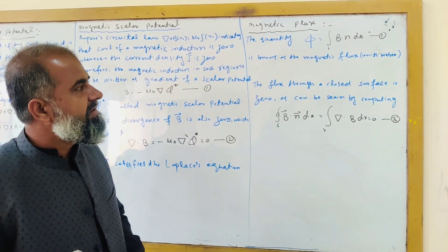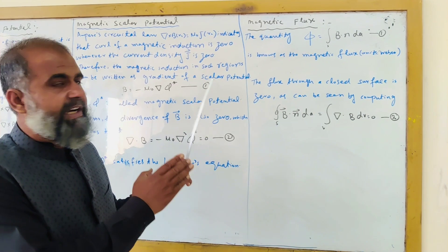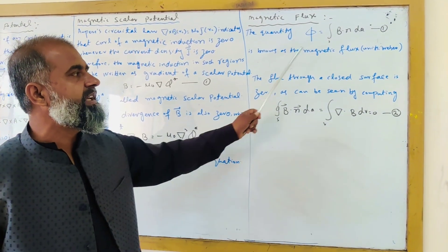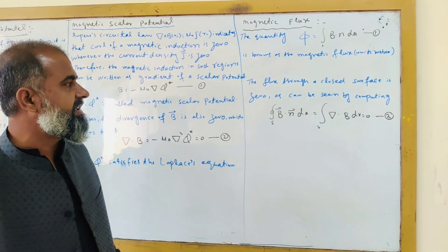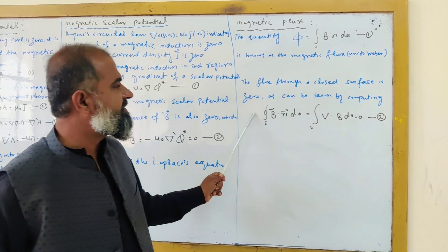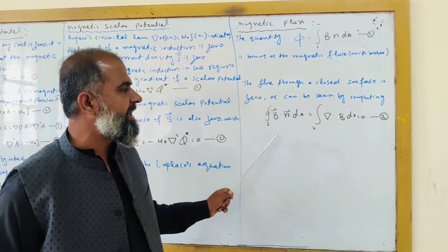Its units are webers. Just like electric flux, we define the magnetic flux phi equals B dot n dA, the surface integral. The flux through a closed surface is zero, as can be seen by computing.